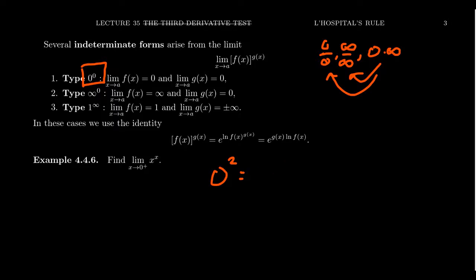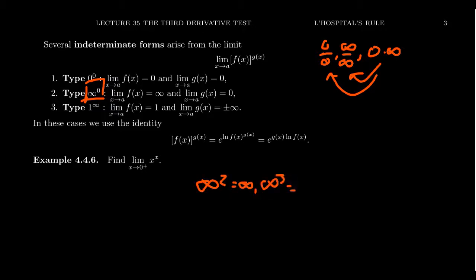What about infinity to the 0 power? If you take things like infinity squared or infinity cubed, that should be infinity. But things to the 0 power should equal 1. So who's more dominant — the base of infinity or the exponent of 0? Again, we get this clash of titans, these two powerful beasts fighting for dominance, and as such it turns out it could be anything.